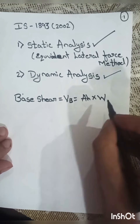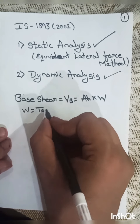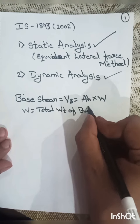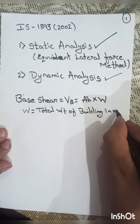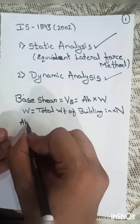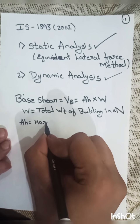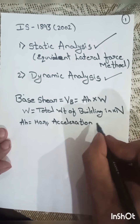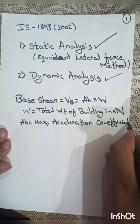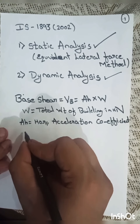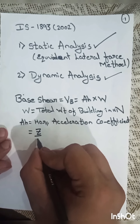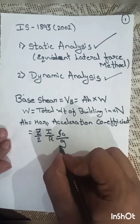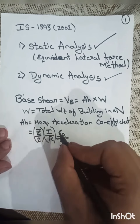Here, W is the total weight of the building in kN, and Ah is the horizontal acceleration coefficient. As per IS 1893:2002, the value of Ah is given by: Ah = (Z/2) × (I/R) × (Sa/g).